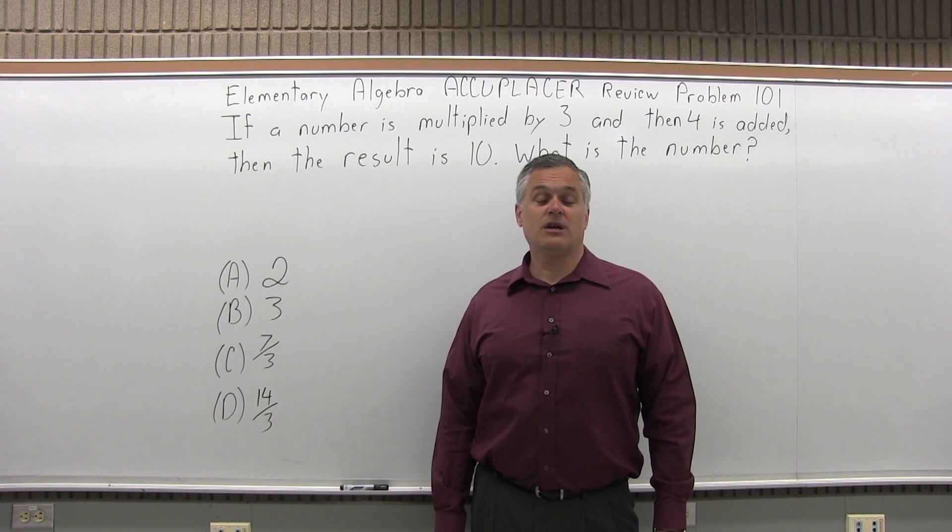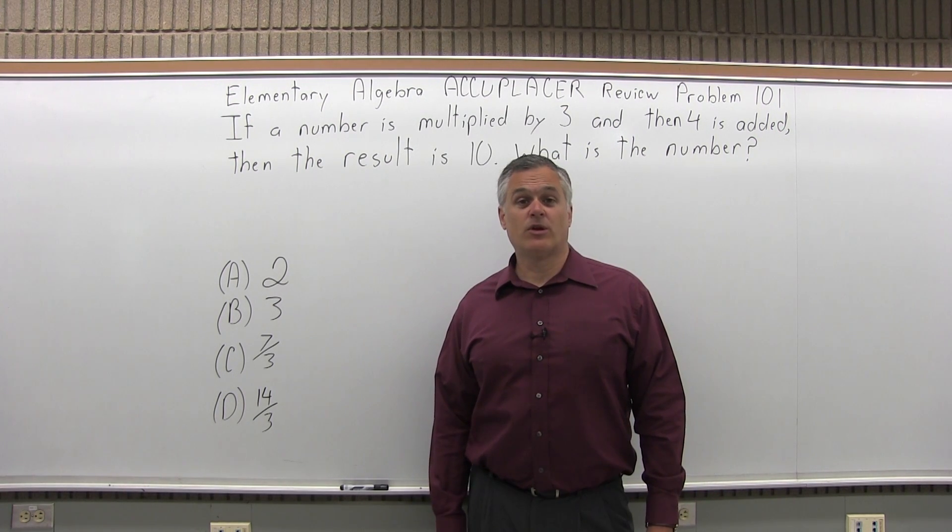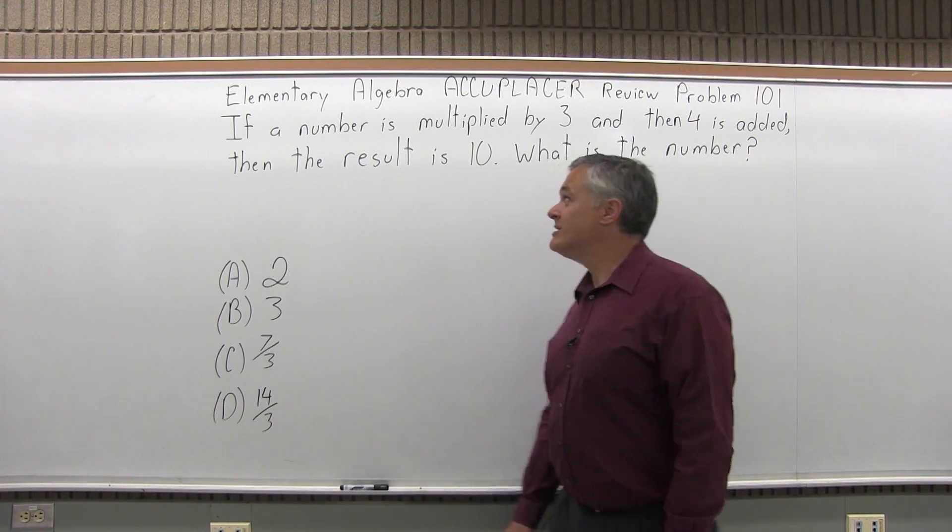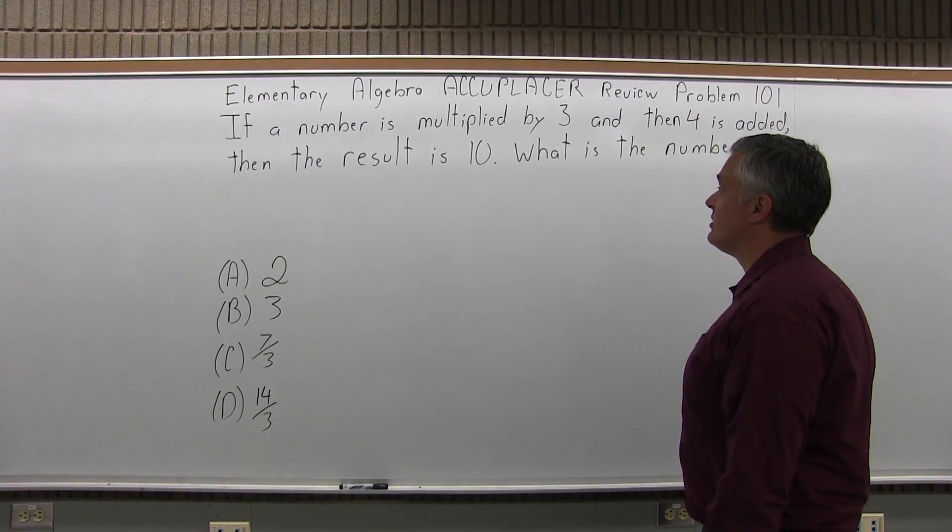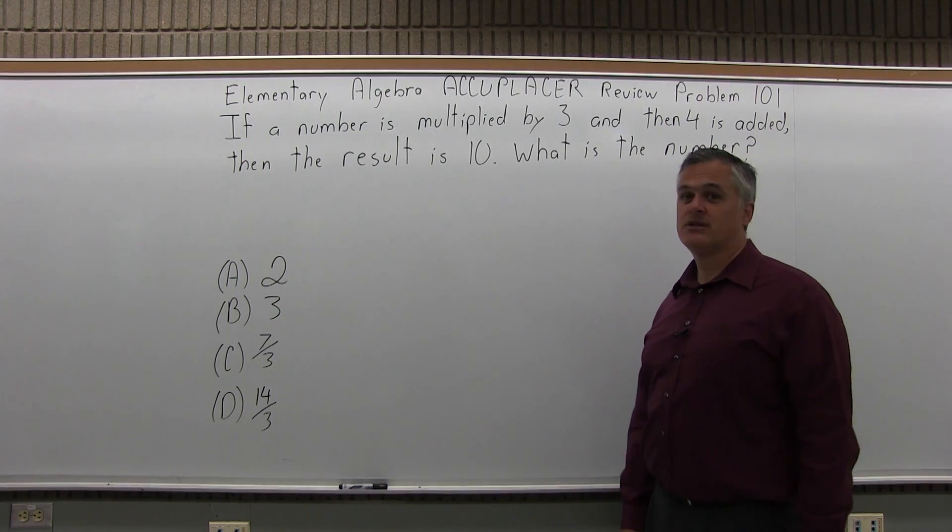This is the Elementary Algebra Accuplacer Review, Problem 101. It says if a number is multiplied by 3 and then 4 is added, then the result is 10, what is the number?